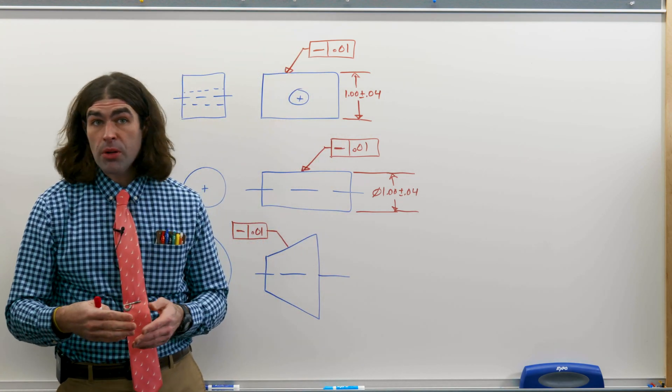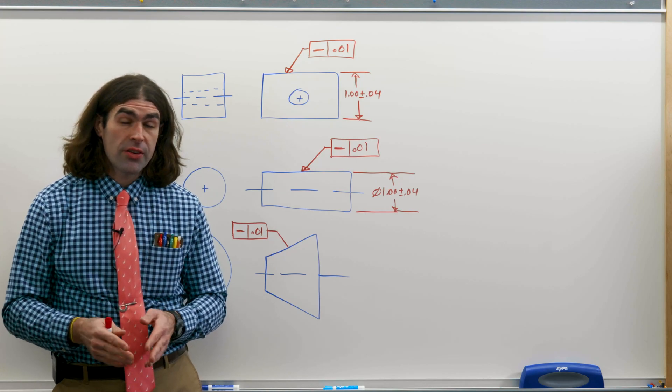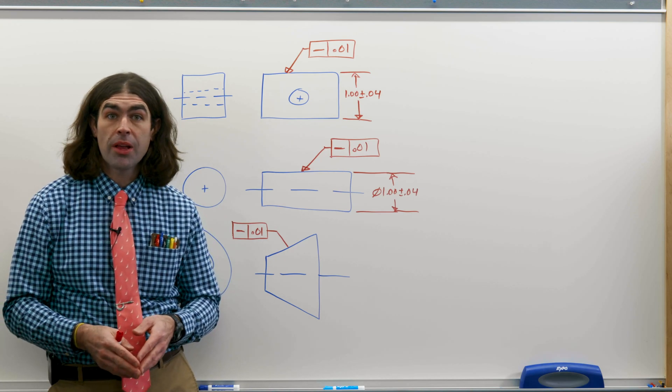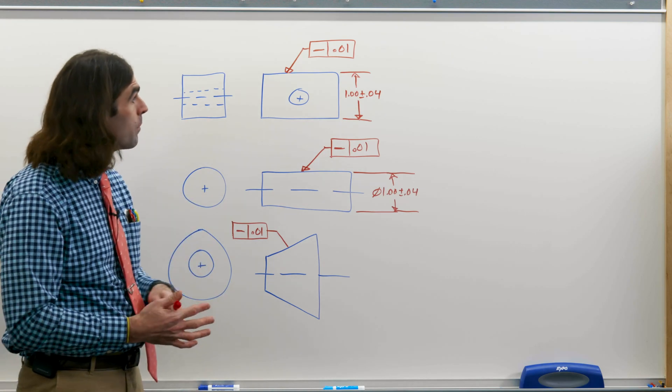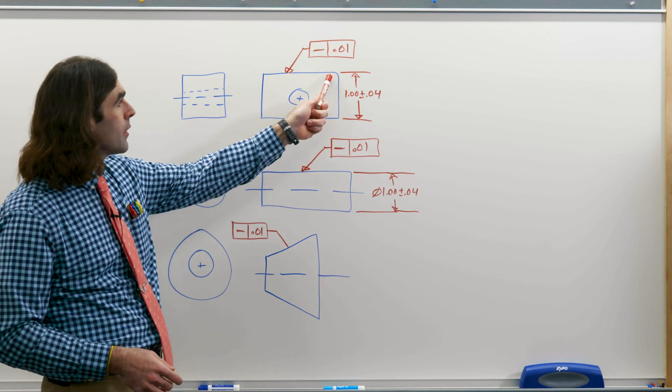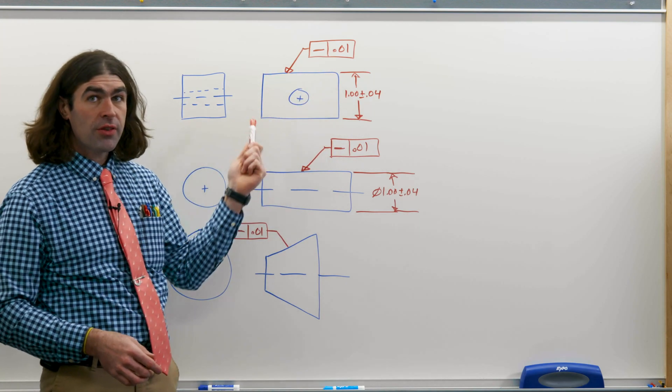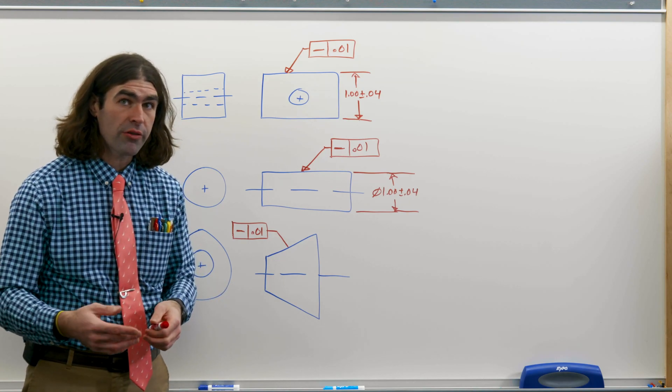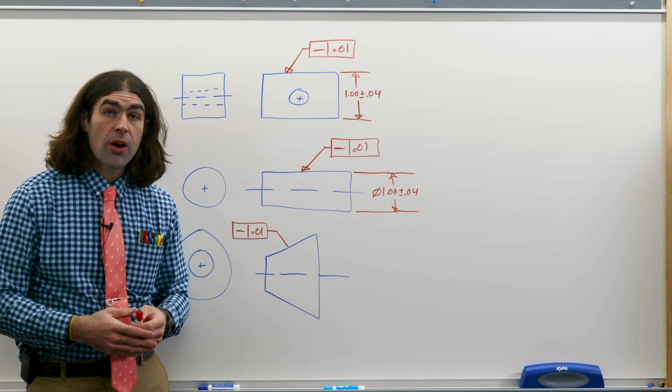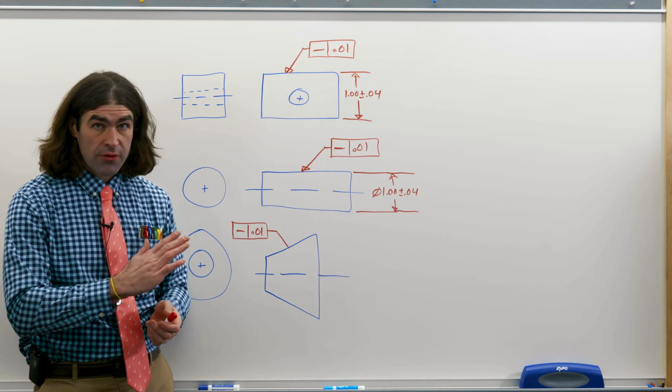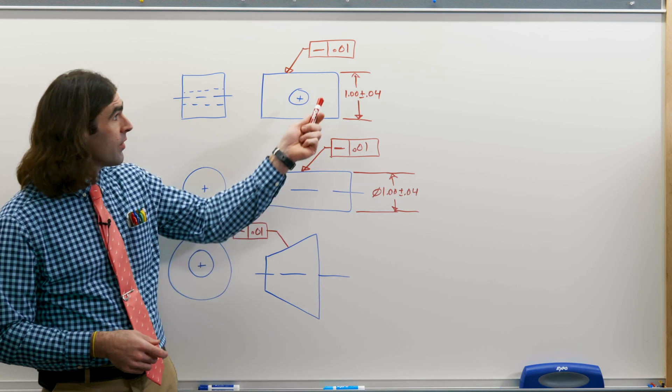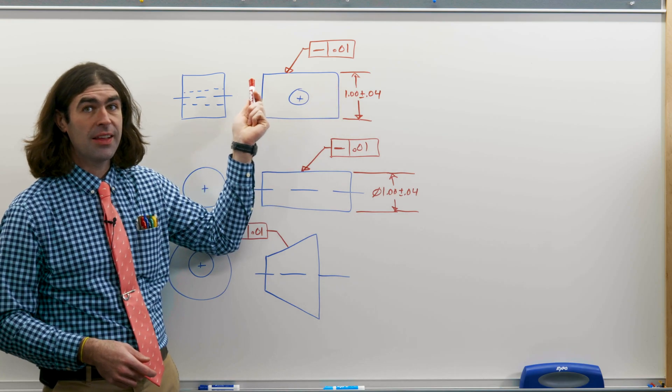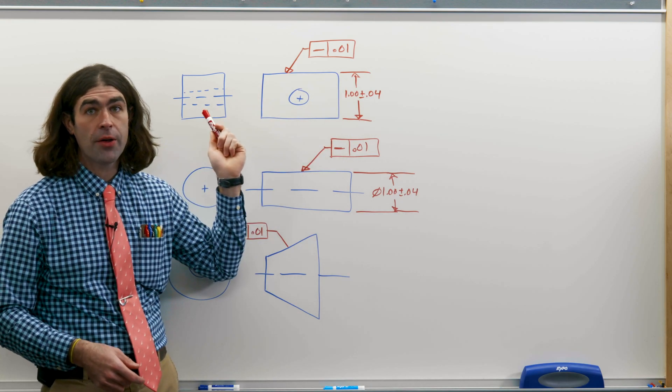On the board are a couple of examples of straightness tolerances applied to different kinds of features. First, the straightness is applied to the top of a rectangular part. We've got a size dimension that controls the location of this surface, and the straightness tolerance just refines the form of the surface. Straightness tolerances only apply in the view you can see, so this straightness controls these lines in this direction, parallel to the viewing plane.